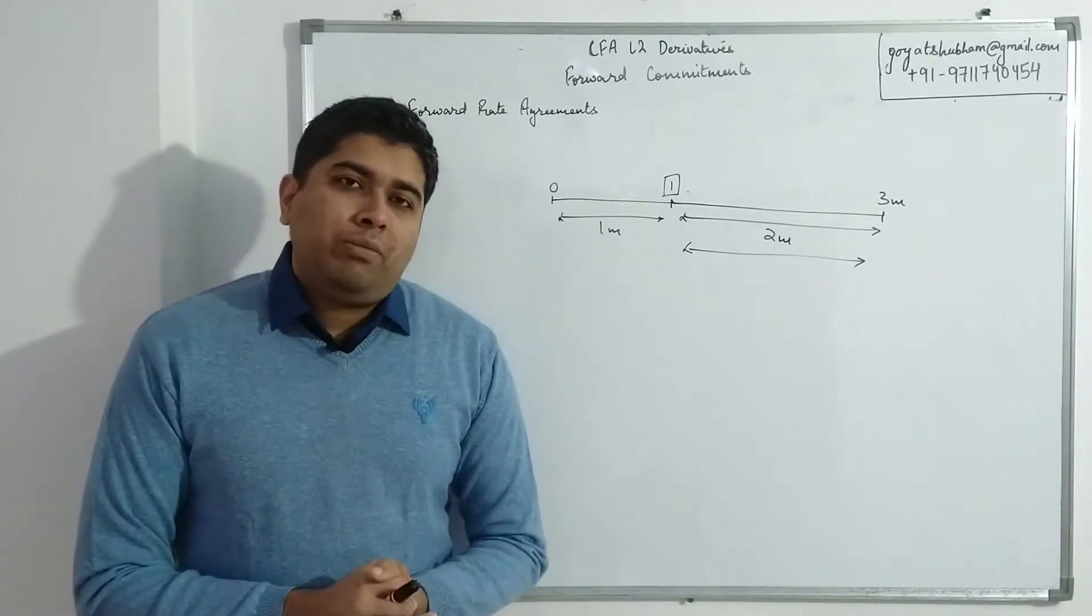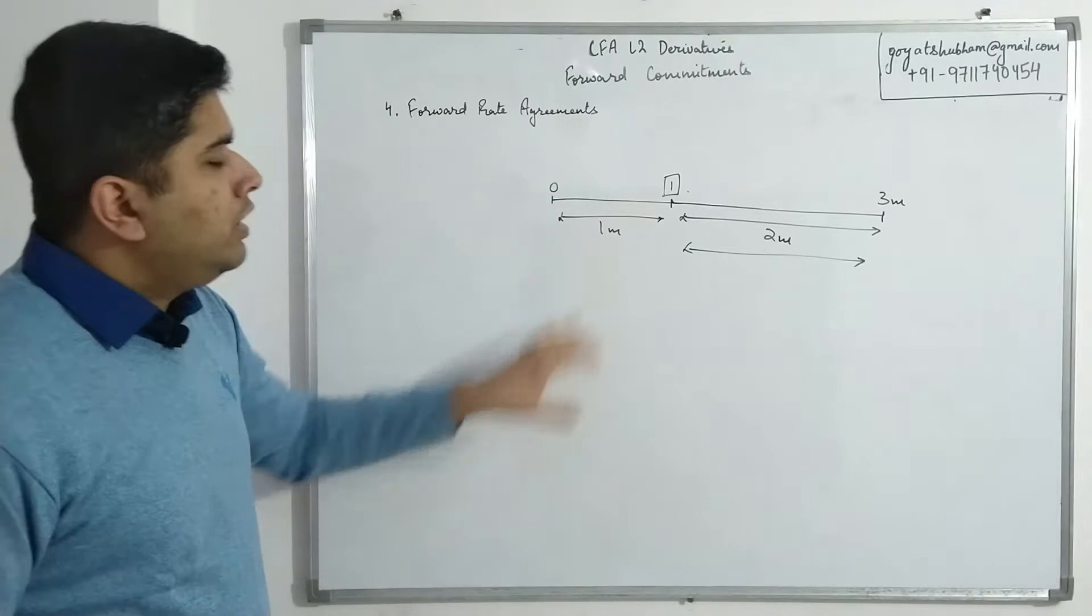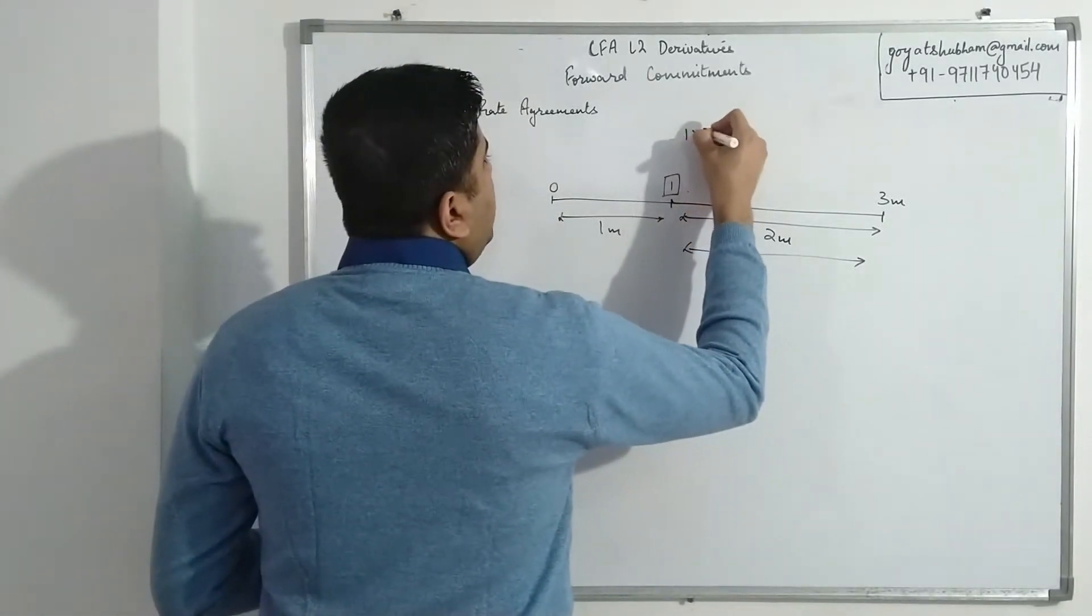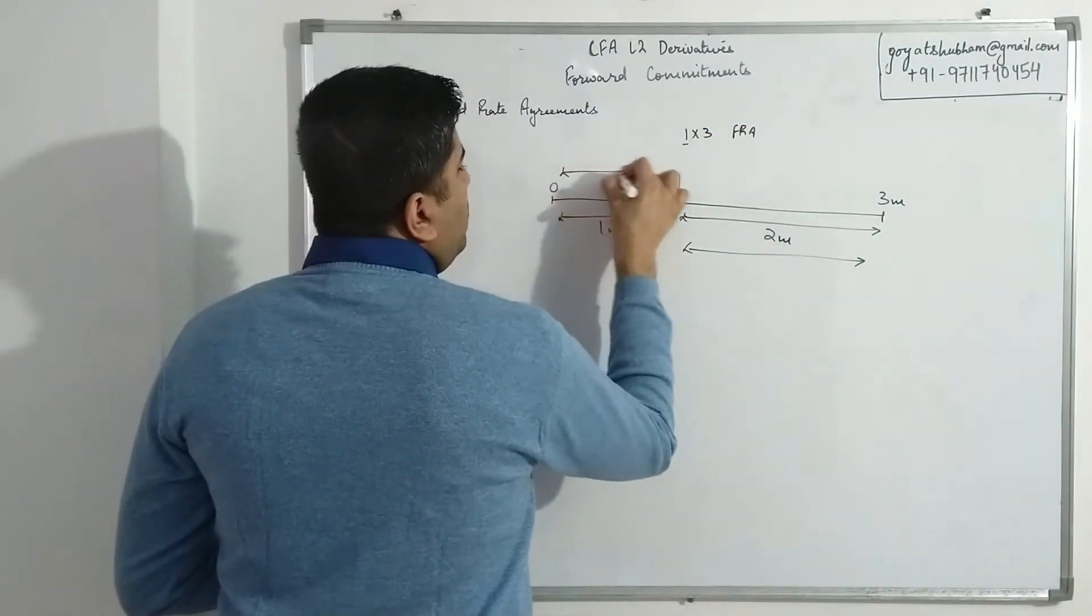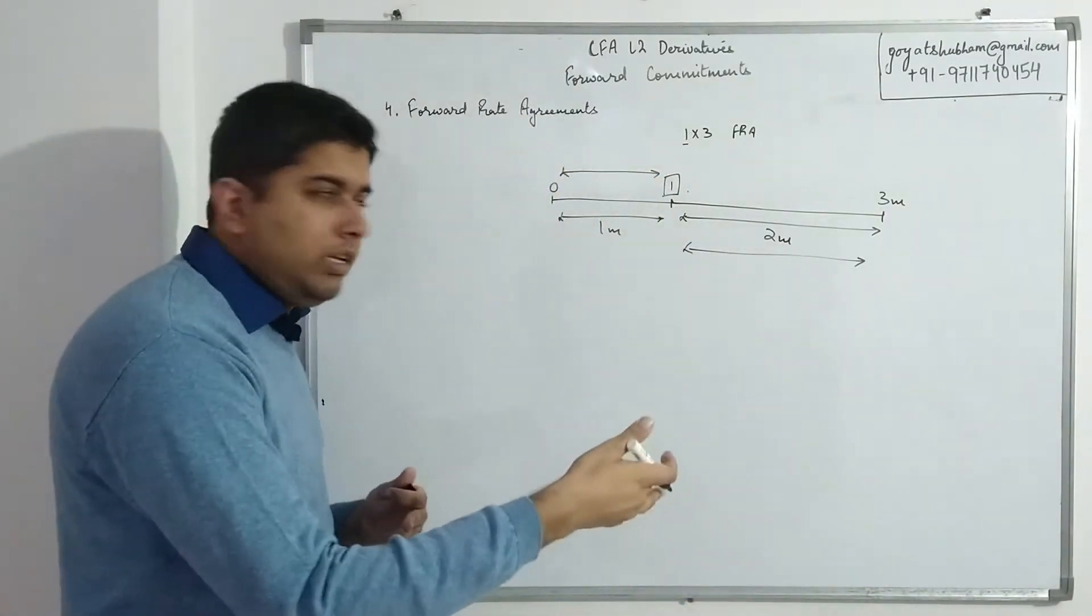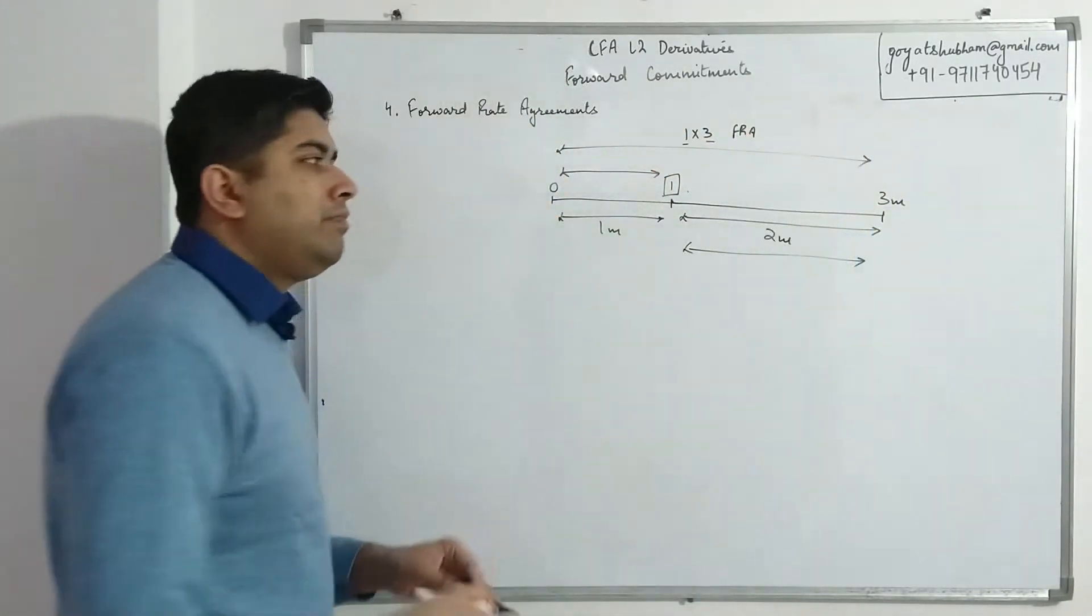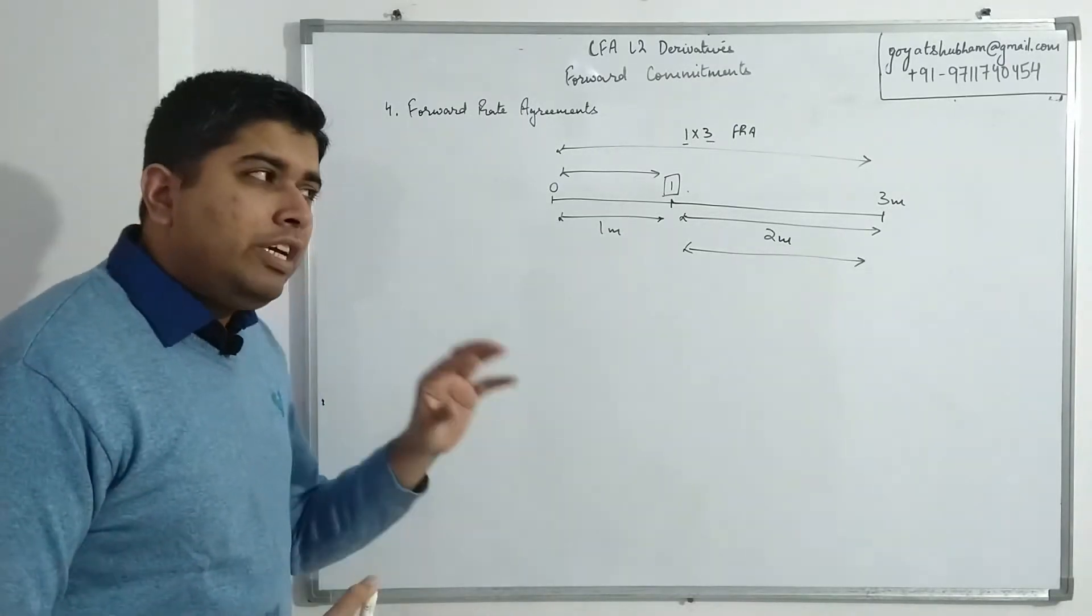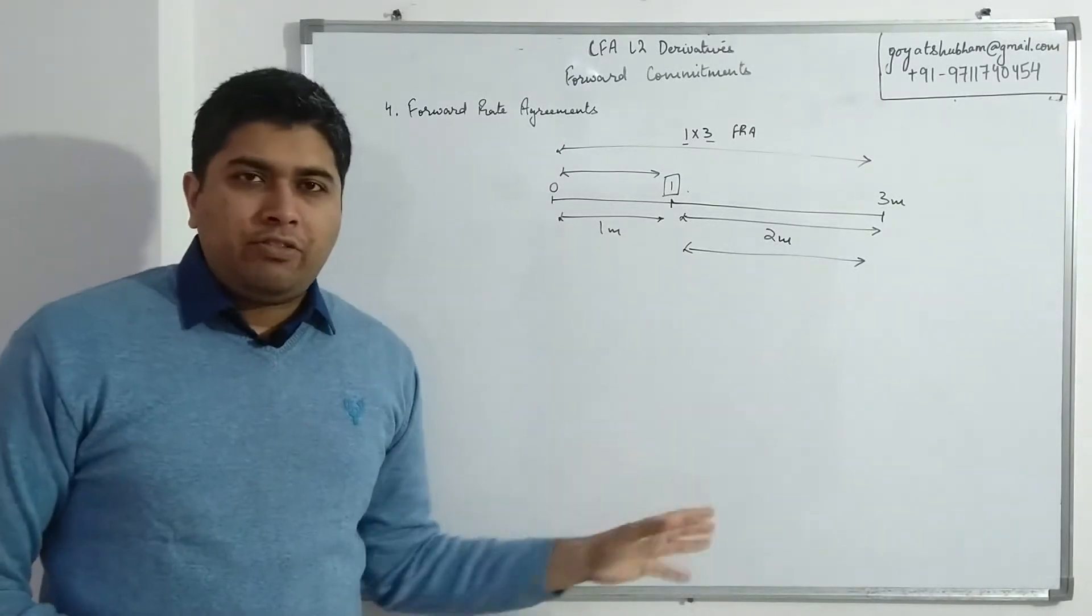So now that we have a basic structure of FRA contract with us, this particular kind of contract is denoted by the notation 1x3 FRA. One representing the delay from current time to the time where the loan would be initiated, and three representing the total duration of this timeline. Now, once you have this timeline with you, my suggestion would be for the initial questions, do make the timeline, because once you make the timeline, the calculations are just time value of money.